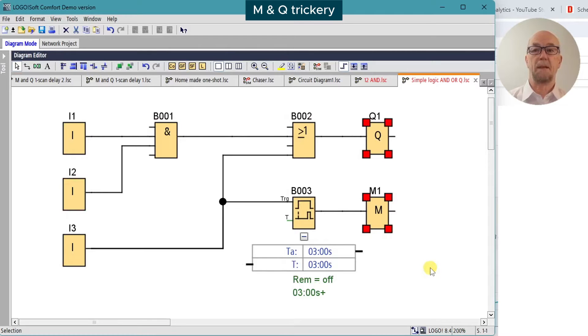Note that the M flags can be considered as outputs, but with no physical terminals. When the inputs are read, they're copied to an image register, so that in this example B2 and B3 will both use the same value for input 3.